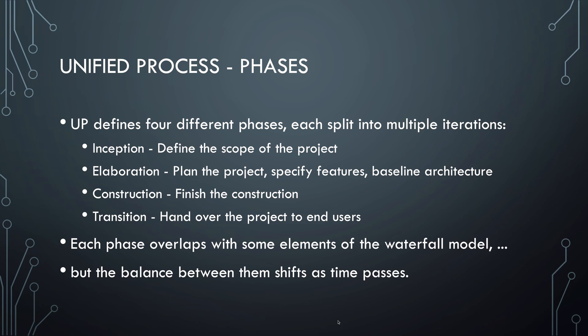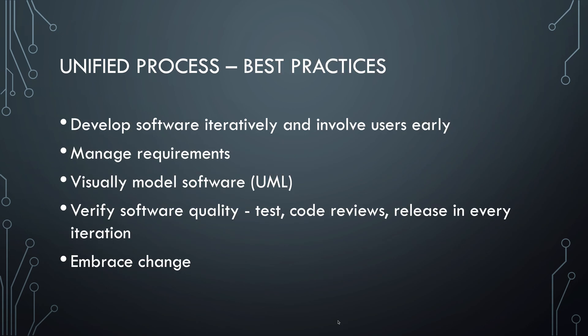UP defines four phases: inception, elaboration, construction, and transition. I'll discuss each of these phases now, but in the coming weeks we'll focus primarily on the first two. UP is about developing software iteratively and involving your users early on. Requirements are important but can change in UP, as opposed to in the waterfall model. UP advocates using visual modeling of software components using a language such as UML — there will be a separate video about that. And finally you verify the quality of the software and release it at the end of each iteration.